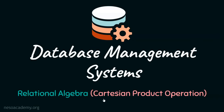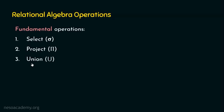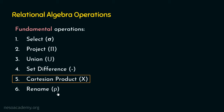Hello everyone, welcome back. In this presentation, we are going to focus on the next relational algebra operation, the Cartesian product. There are six fundamental relational algebra operations: the select operation, the project operation, union, set difference, Cartesian product, and rename operation. We have already seen select, project, union, and set difference. In this presentation, we are going to focus on the Cartesian product.